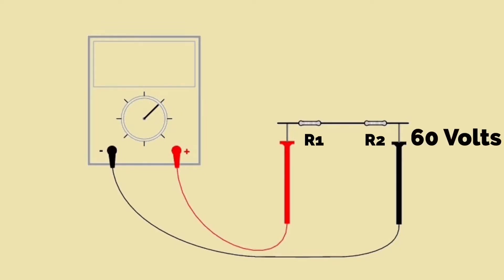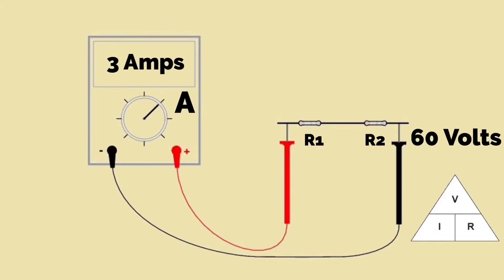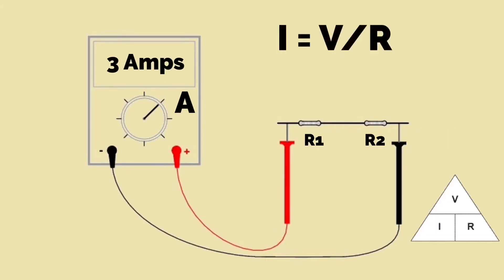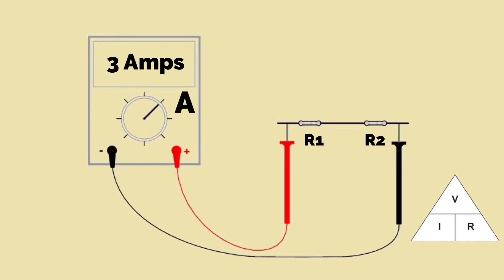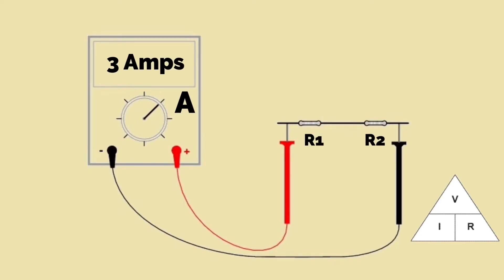If we apply the same voltage of 60 volts and set the multimeter to measure current, it works out the Ohm's law calculation — current equals voltage divided by resistance, in this case total resistance. So current in the circuit would be 60 volts divided by 20 ohms, giving a circuit current of 3 amperes. In a series circuit, current is common to all parts, therefore 3 amperes will flow through resistor 1 and resistor 2.